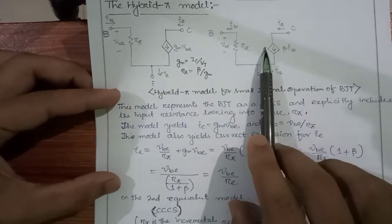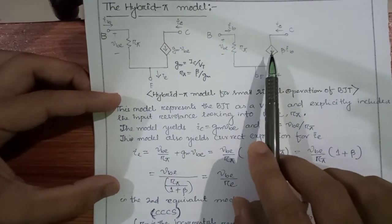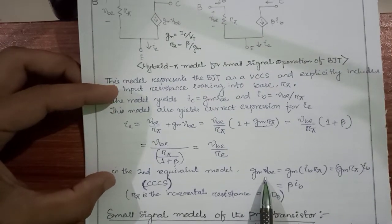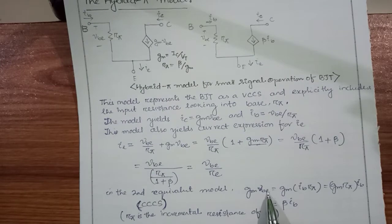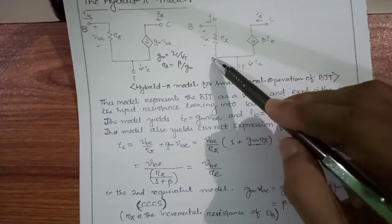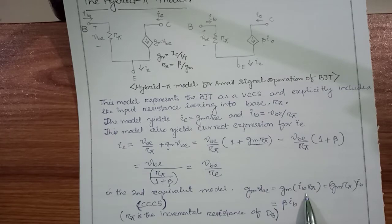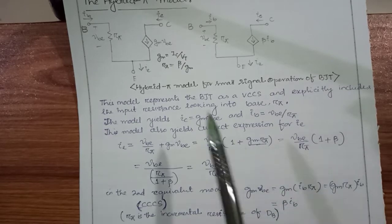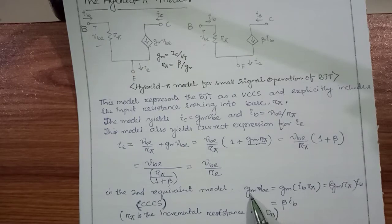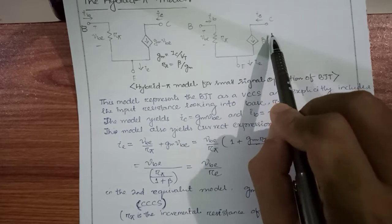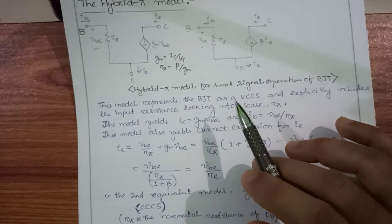This was for the first diagram. For the second diagram, it is a current controlled current source, where I_C is controlled by I_b. Here G_m·V_be can be rewritten: since V_be = I_b × r_pi, substituting gives G_m × I_b × r_pi. Since G_m × r_pi = beta, the controlled current source becomes beta·I_b. So in place of G_m·V_be, we can use a controlled current source with value beta·I_b. This is the hybrid pi model; the re model uses resistance seen from the emitter side.